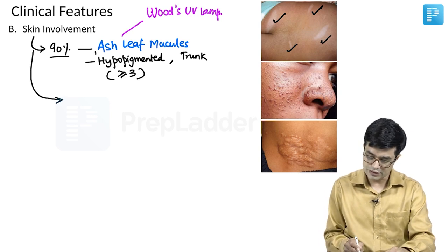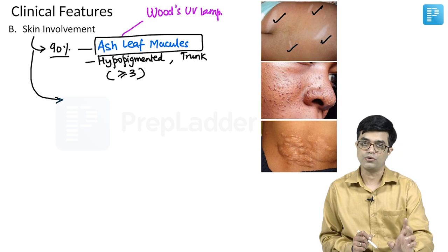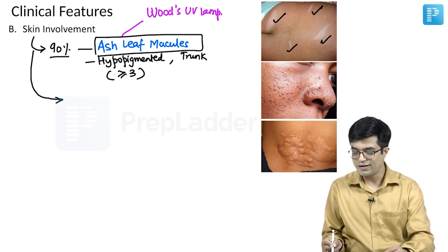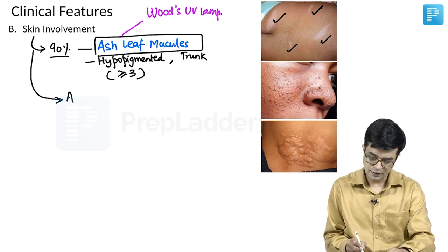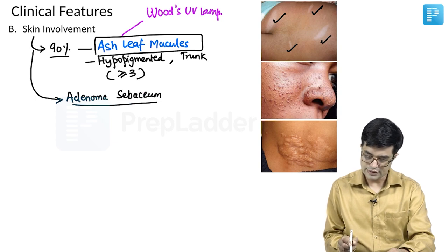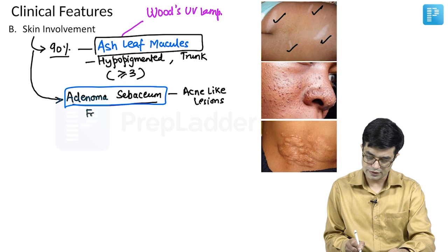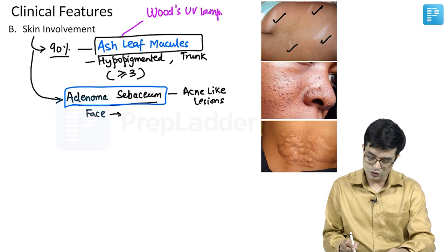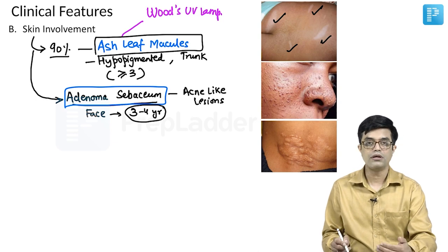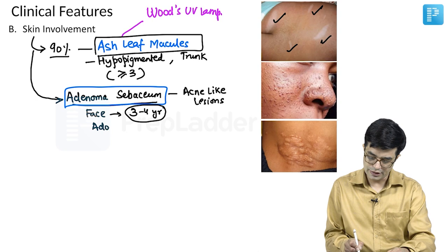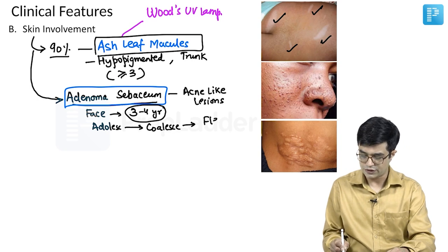The second type of skin lesion is adenoma sebaceum — acne-like lesions that are a kind of benign tumors occurring on the face, particularly in the nasal bridge and cheek area. They tend to appear around 3 to 4 years of life and increase in size and number as age progresses. Beyond adolescence, some of them coalesce and form fleshy lesions rather than remaining discrete.